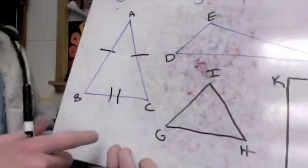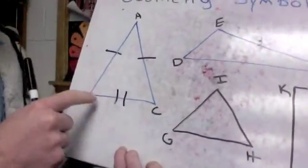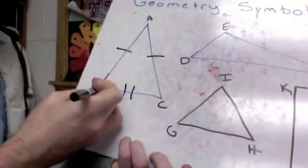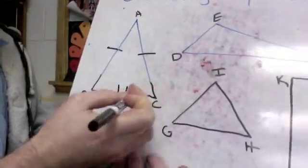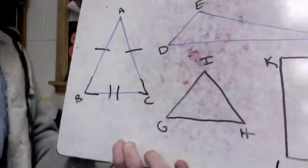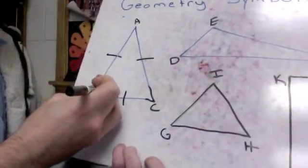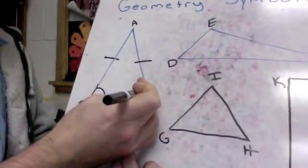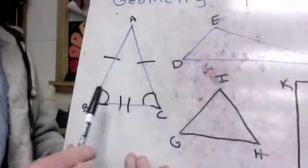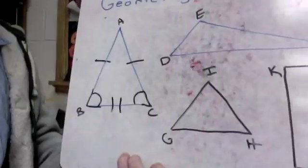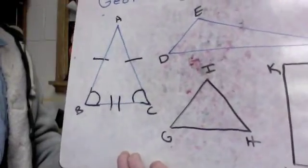Something else you might see: I know that angle B — we just call it angle B because that's the vertex — and angle C are the same. Sometimes they won't come right out and tell you that. They'll draw a little arc right here and then draw a little arc right here. If they both have that one arc drawn in it, that means they are the same measurement or the same angle.